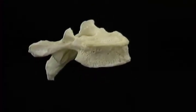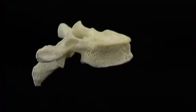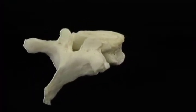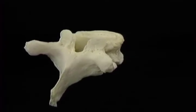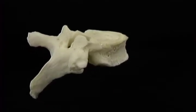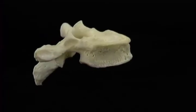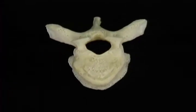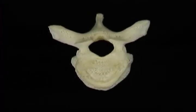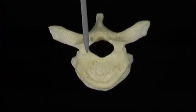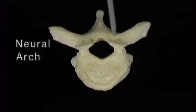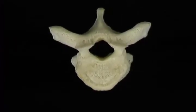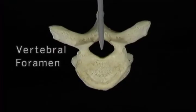Behind, there's a set of bony plates and projections which serve three functions: to protect the spinal cord, to give attachment to muscles and ligaments, and to articulate with the adjoining vertebrae. This arch of bone, the neural arch, encloses the spinal cord. The space surrounded by the arch and the back of the body is called the vertebral foramen.